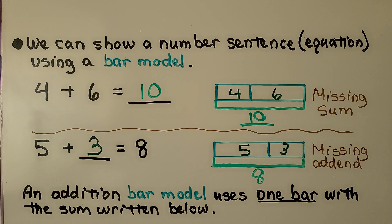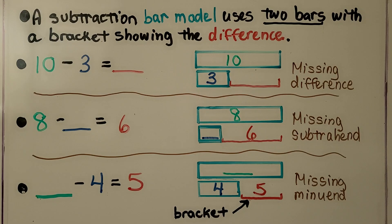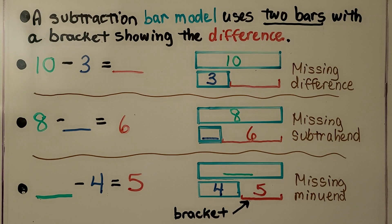An addition bar model uses one bar with the sum written below. A subtraction bar model uses two bars with a bracket showing the difference.